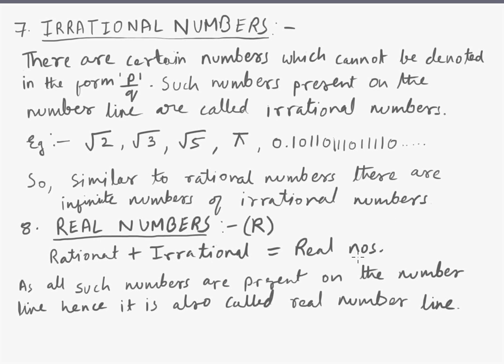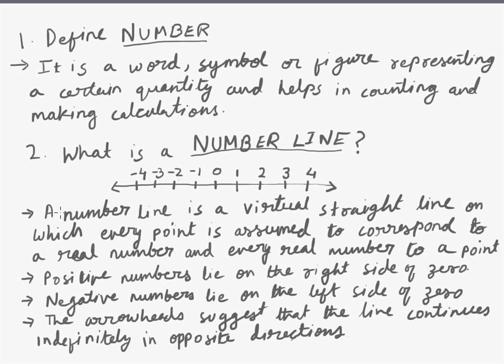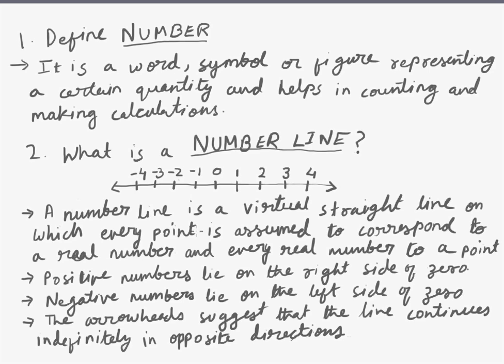Lastly, we come to real numbers. A set of numbers combining all the rational and irrational numbers is called real numbers. All such numbers are present on the number line. Hence, the number line can also be called a real number line. Thus moving on to the definition of the number line once again, we will see that a number line is a virtual straight line on which every point is assumed to correspond to a real number or every real number to a point. Hence, the number line is also called a real number line.